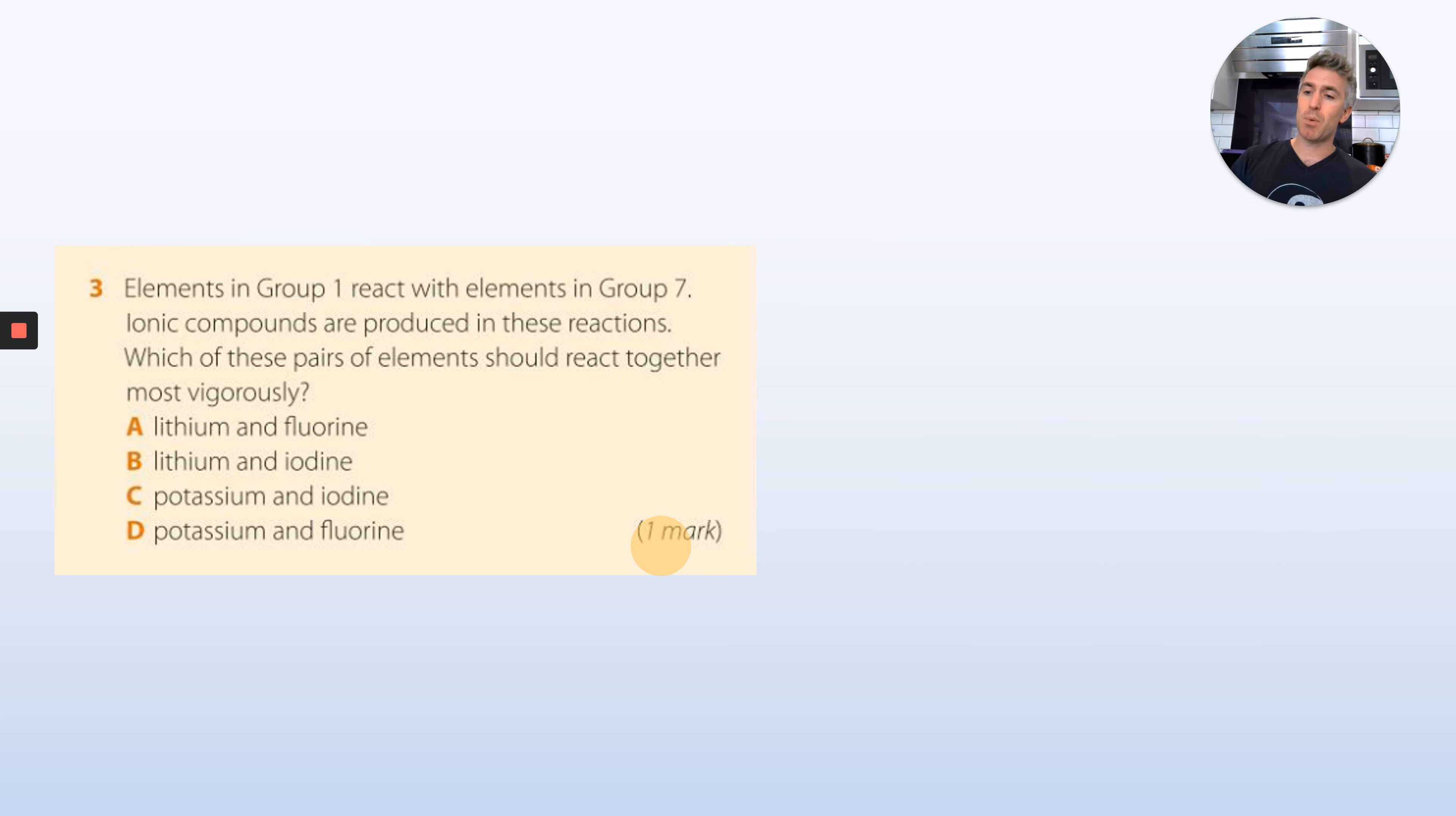Elements in Group 1 react with elements in Group 7. Which ionic compounds are produced in these reactions? Which of these elements would you expect to react most vigorously? Is lithium and fluorine the most vigorous, lithium and iodine, potassium and iodine, or potassium and fluorine? Which are the most reactive of Group 1? Which is the most reactive of Group 7? You put them together, which is going to be the most reactive overall?